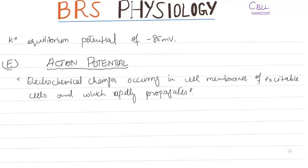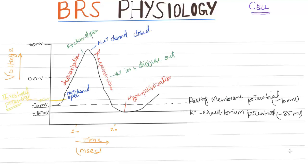Action potential is defined as the electrochemical changes occurring in the cell membrane of excitable cells, which rapidly propagate. Key terms: depolarization makes the membrane potential less negative; hyperpolarization makes it more negative; inward current is the flow of positive charge into the cell; outward current is the flow of positive charge out of the cell; threshold is the membrane potential at which an action potential is inevitable. On an ionic basis, resting membrane potential is approximately −70 mV (cell negative), resulting from high resting conductance of potassium. At rest, sodium channels are closed and sodium conductance is low.